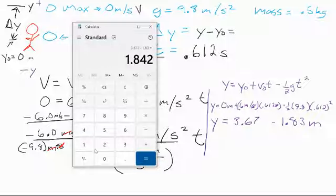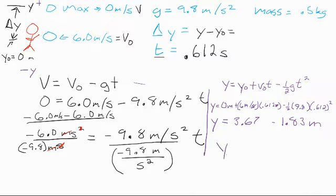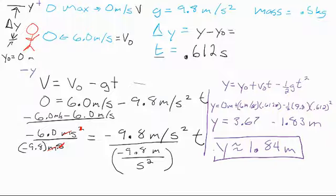And so we get that our total is that one of the options? 1.84 meters. There you go. That takes a while, because I'm explaining it. 1.84.